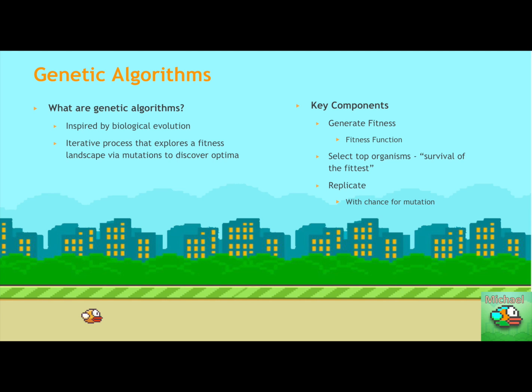They're inspired by biological evolution and they're an iterative process that explores the fitness landscape via mutations to discover the optimal. There's three components. There's generating fitness, using some sort of fitness function, which will measure how fit a particular organism is, especially with respect to the organisms within that same species. And then the selection will select the top organisms from that species. And this is commonly known as survival of the fittest. And then it will replicate amongst those top organisms with a chance for mutation. And the mutation is the key piece which allows it to explore the fitness landscape.